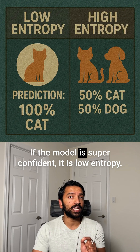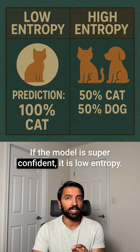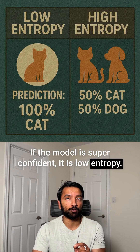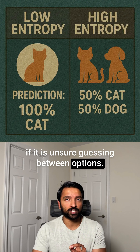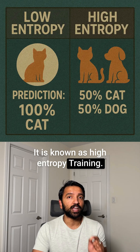If the model is super confident, it is low entropy. If it is unsure, guessing between options, it is known as high entropy.